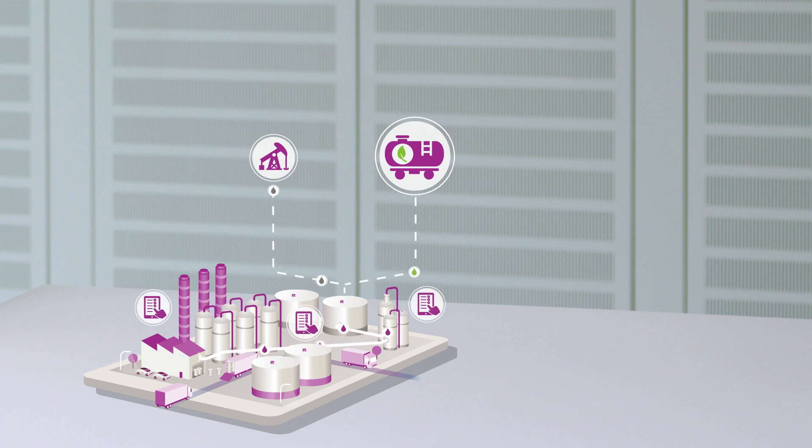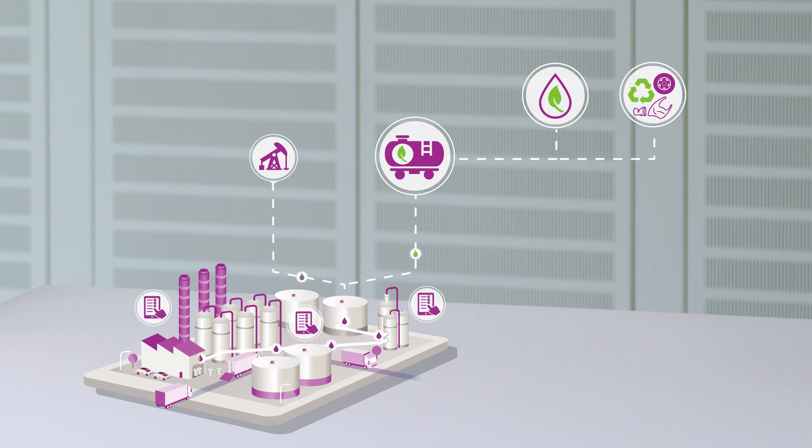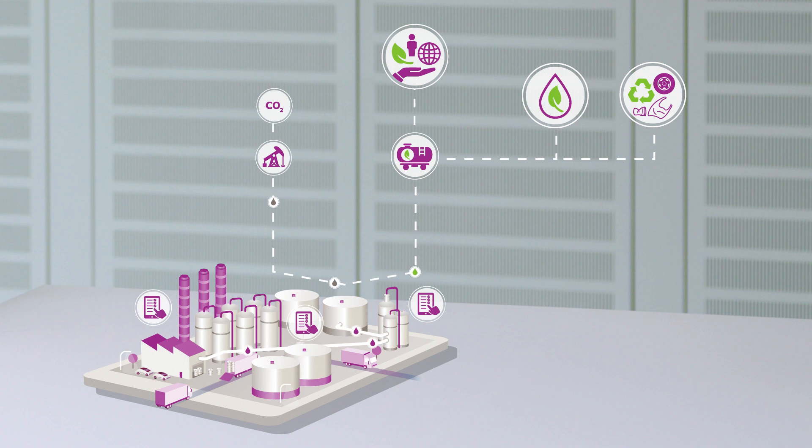Along the value chains, we substitute fossil feedstocks with those that are biobased and circular feedstocks. We select raw materials based on fossil resource savings, carbon dioxide reduction, and other social and ecological factors.